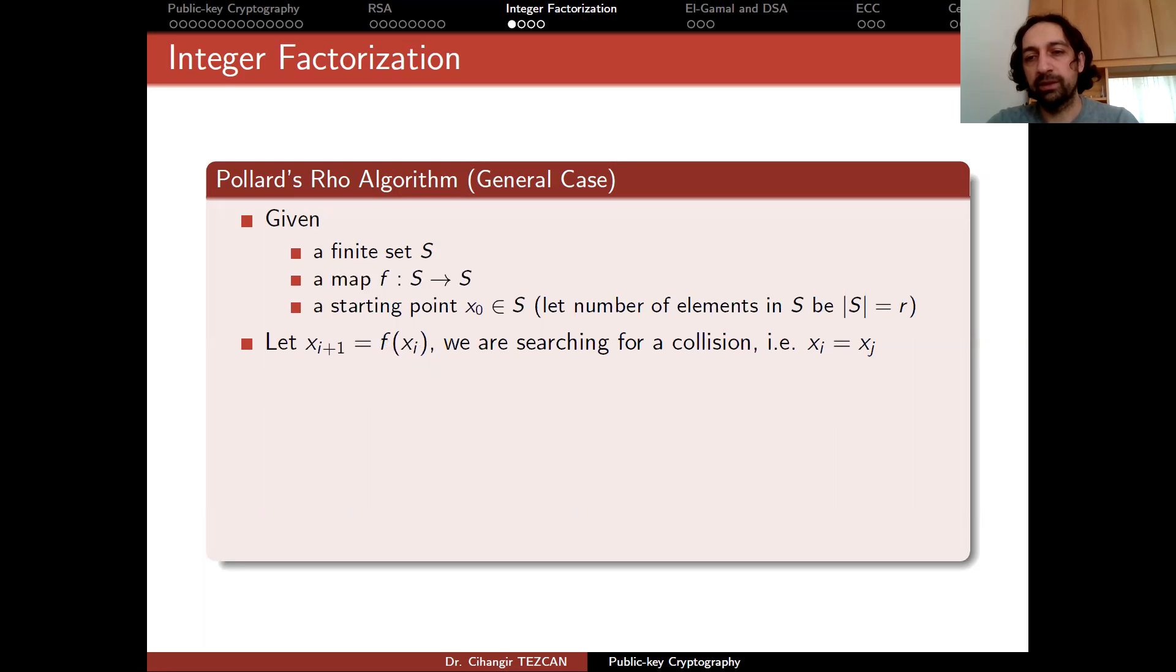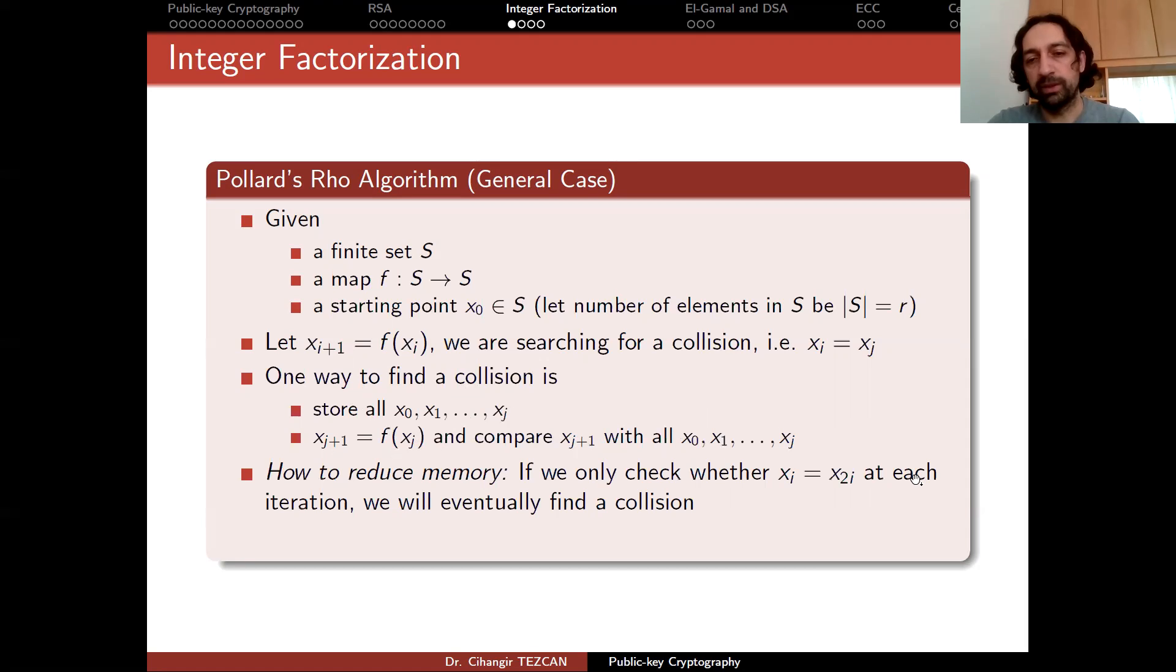So if you succeed in this kind of attack, then you will find a collision for a hash function. One way to find a collision is to store all of the x_i's that you computed so far. So from x_0 to x_j, you store all of them. And when you compute f(x_j), which will be x_{j+1}, now you compare this value with all of the data you store so far. Of course, you don't do it by checking one by one. You just sort this and then apply a binary search algorithm to check if this element is inside this set, which is a logarithmic time algorithm. But of course, if you store all of the values, since the size of the S would be large, we cannot store all of them. So it will take a lot of memory to store them.